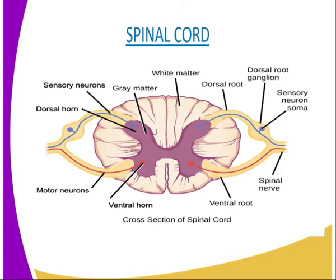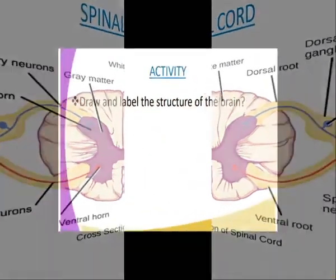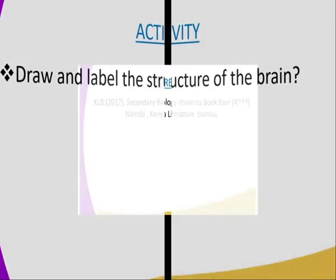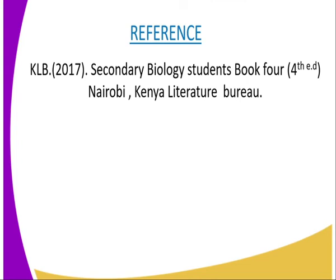Arising from the spinal cord are what we call the dorsal and ventral roots of the spinal nerves. The spinal nerves innervate the skeletal muscles of the limbs and the trunk. You can now have the following activity: you are required to draw and label the structure of the brain. For this lesson, you can refer to KLB secondary biology student book 4, which is the 4th edition.